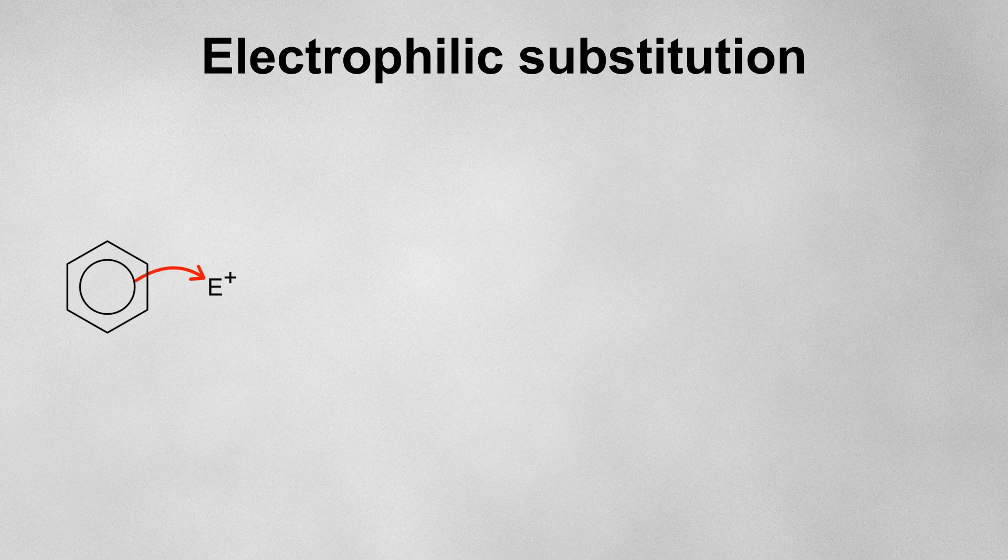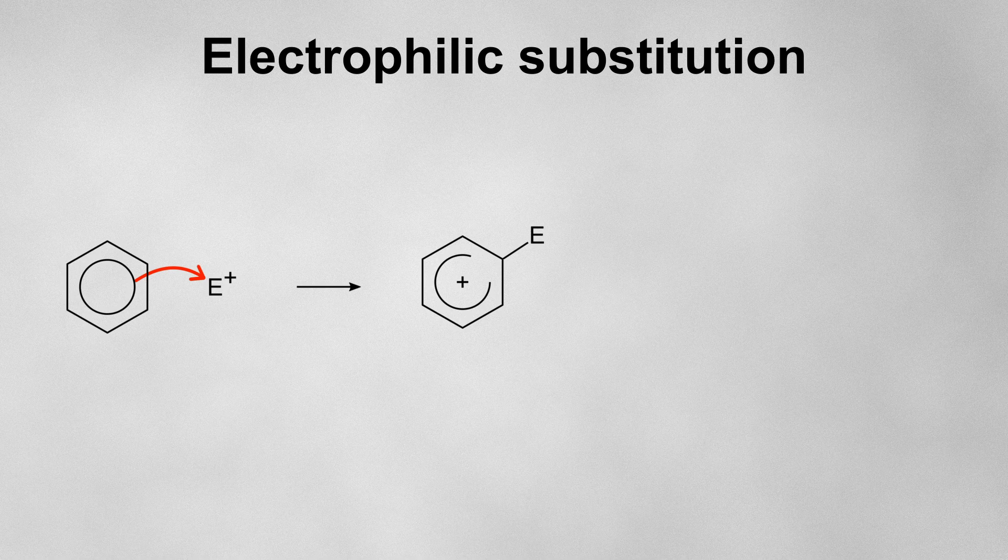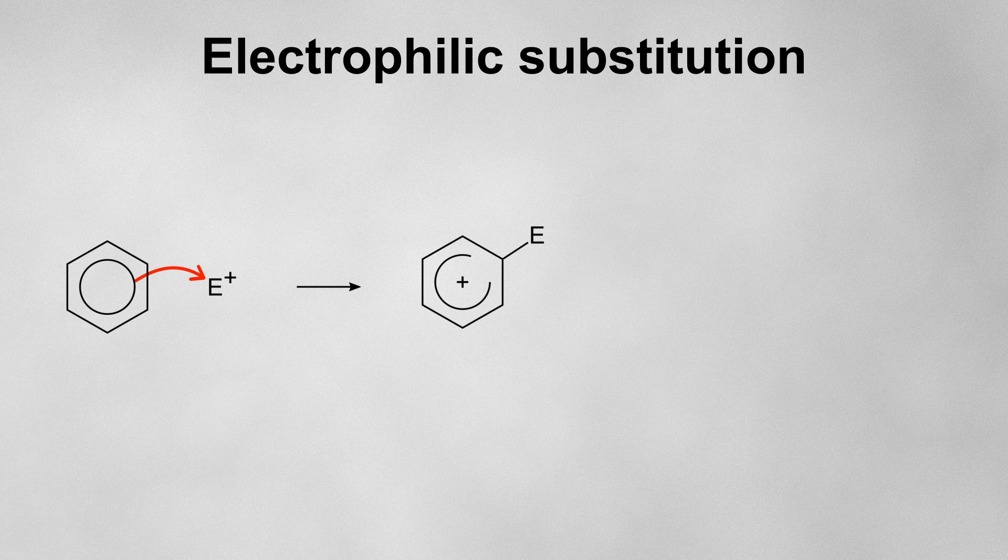This leaves us with a benzene ring where the delocalised pi system has lost electron density, which we can represent with a broken ring with a positive charge in it. We also have a new bond from one of the carbons to the electrophile, but we need to remember that this carbon was already bonded to a hydrogen.